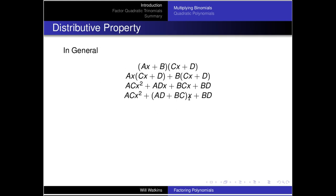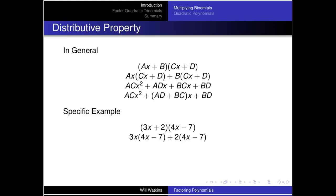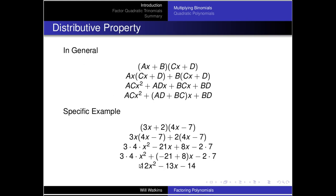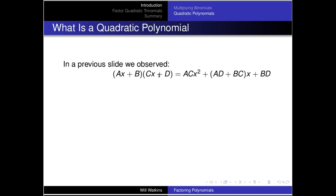Let's look at a specific example: (3x + 2)(4x - 7). We apply that first bit of multiplication using the distributive law, and then there are some like terms to combine. After combining those like terms, there's our final result.